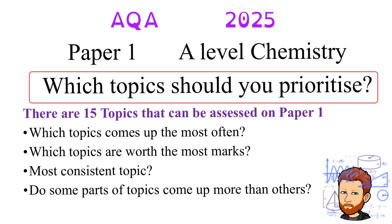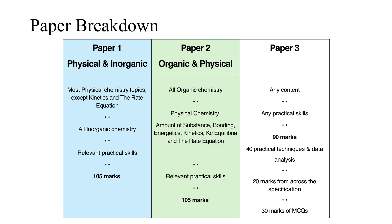Since there are 15 topics that can be assessed on Paper 1, it will be really useful to know which topics come up the most often, and which topics are worth the most marks on average across the papers. Is there a topic that comes up more consistently than others, and from within these larger topics, are there some parts that come up more often? This is a physical and inorganic chemistry paper, meaning almost all of the physical chemistry can be assessed — with the exception of kinetics and the rate equation — and all of inorganic chemistry can be assessed, along with relevant practical skills.